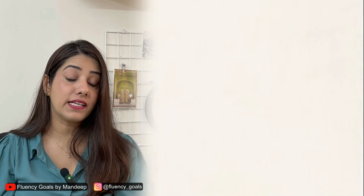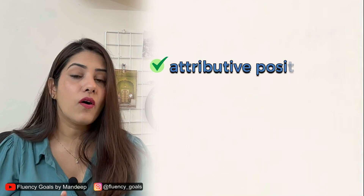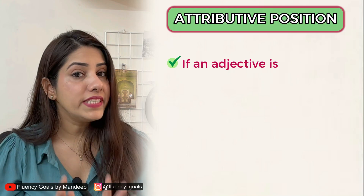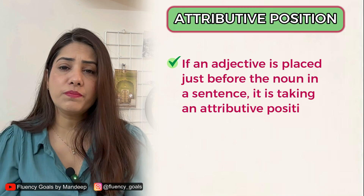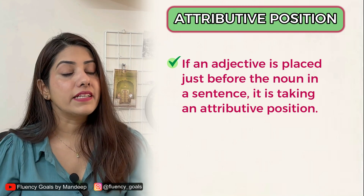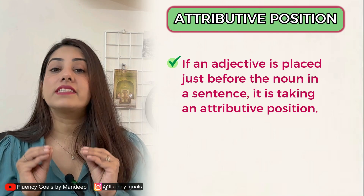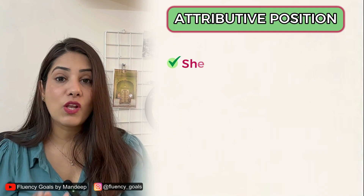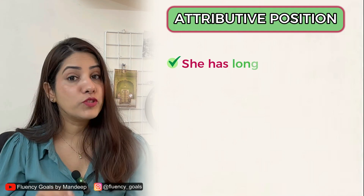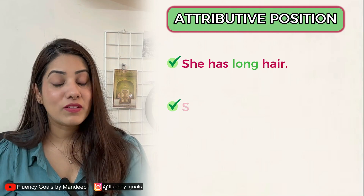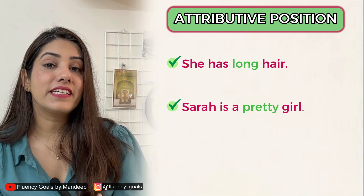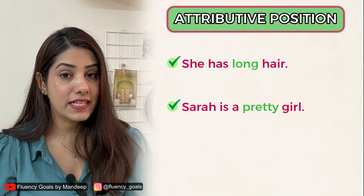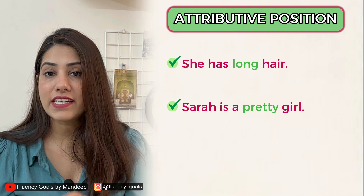Adjectives in a sentence can either take an attributive position or a predicative position. If an adjective is placed just before the noun in a sentence, it is taking an attributive position because it is attributing and describing the noun directly. For example: 'She has long hair' — here 'long' is positioned just before the noun 'hair'. 'Sarah is a pretty girl' — here 'pretty' is taking its position just before 'girl', so it is in an attributive position.